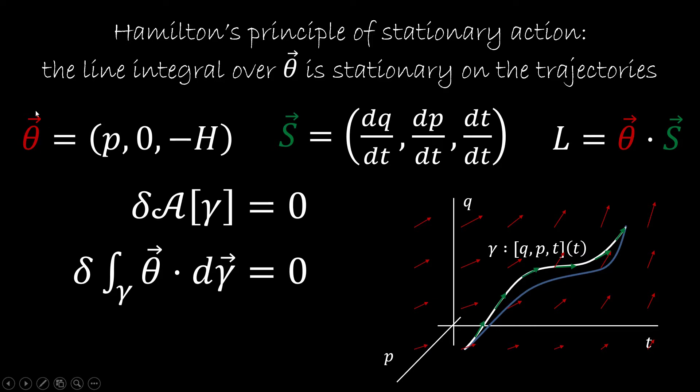which is another vector field of components P, 0, and minus H. We have seen that Lagrangian is the scalar product between the two. And we have seen that the action is the line integral of theta. So the question is, what does theta represent?